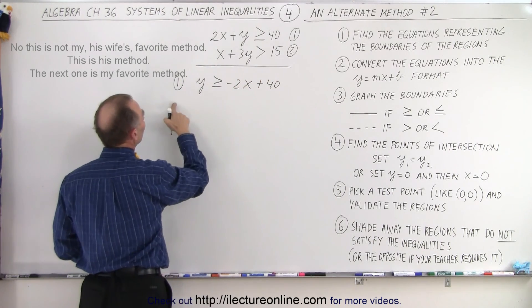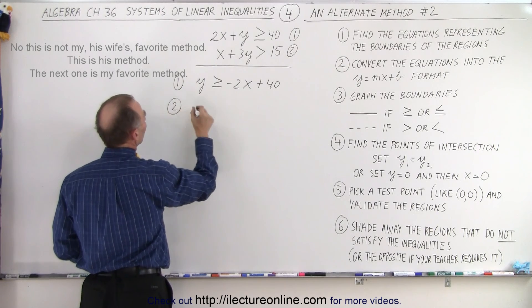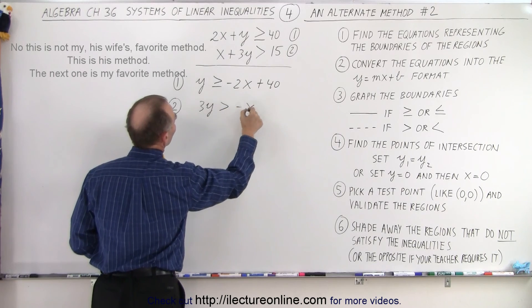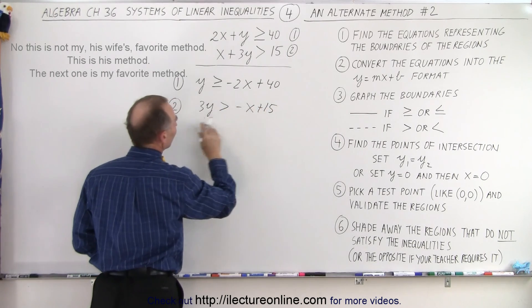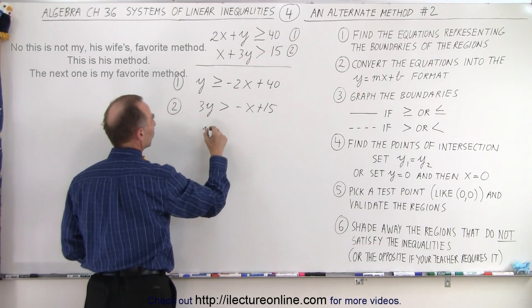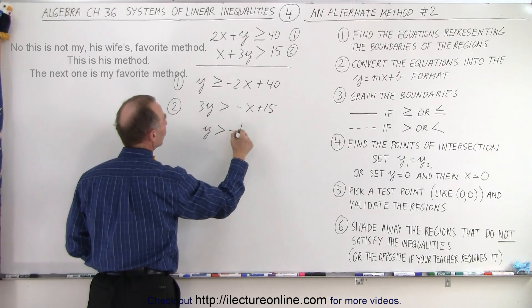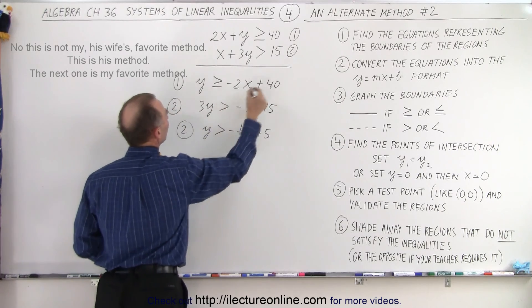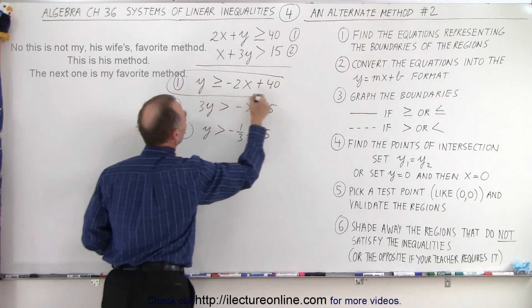And then we solve the second inequality. So here we have 3y is greater than -x + 15, and then divide both sides by 3. We get y is greater than -1/3x + 5. So now we end up with the two alternate inequalities.